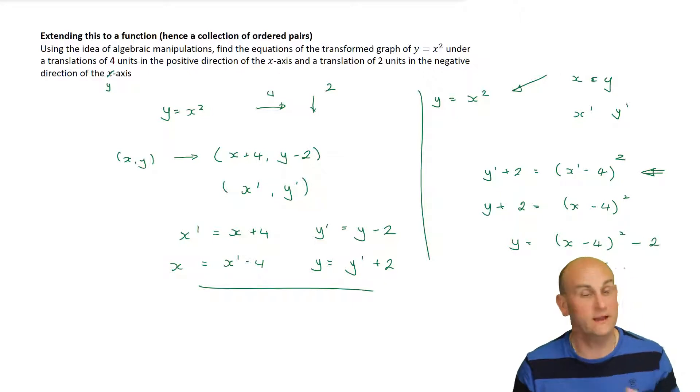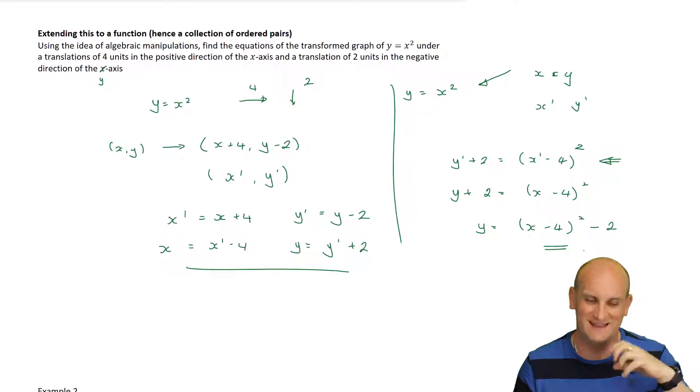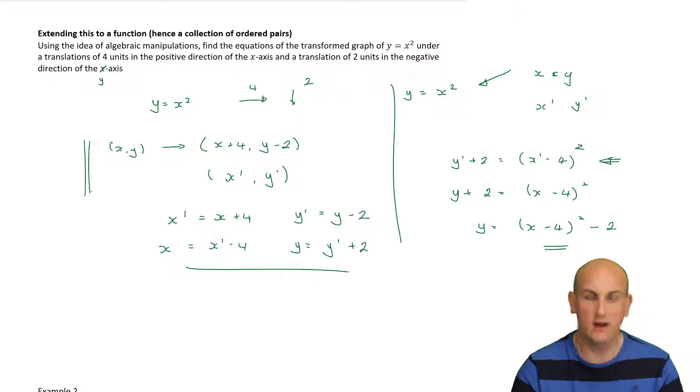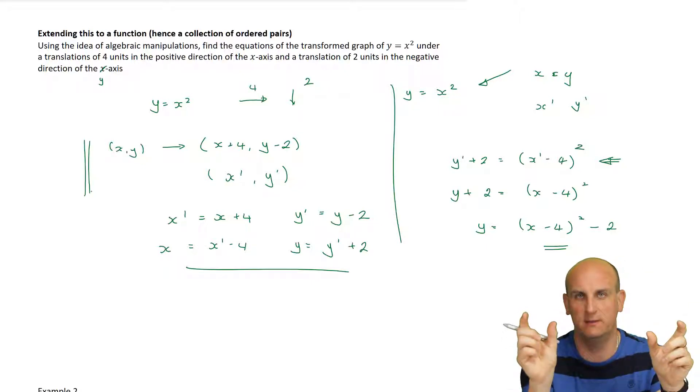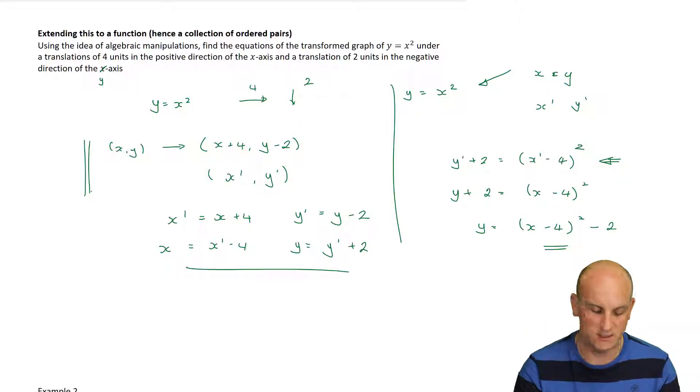Now, you're going to say, well, that was a lot of work, and I don't disagree with you, but this is a relatively contrived and simple example. And so, as such, I'm trying to show you the process. But, the key lines of working out are actually those two there. This x comma y, this transformation matrix, or this transformation algebra, and then writing below it x dashed and y dashed, equating them, substituting them back into my original function, and then rearranging it for y equals.